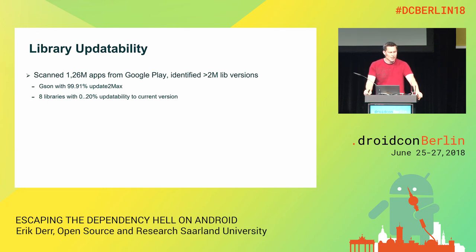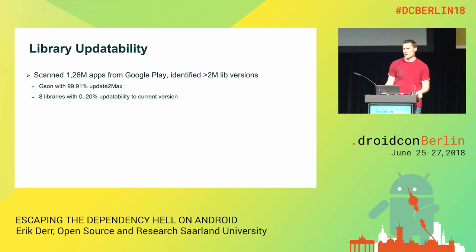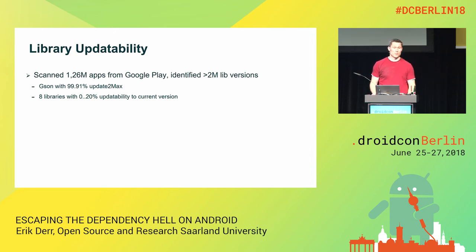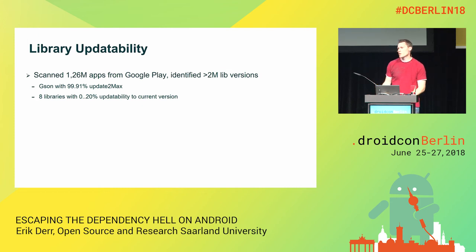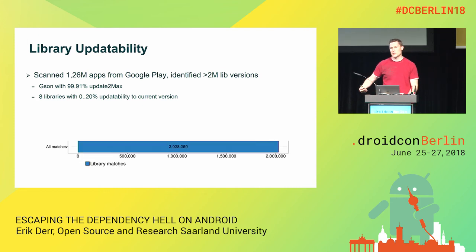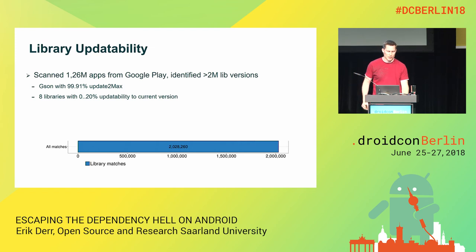A surprising example was Gson, Google's JSON library, which had almost perfect updatability to the latest version. There are a couple of reasons: not that many versions, apps use only a very small subset of APIs — typically just 'fromJson' and 'toJson' — and those APIs rarely change across all library versions. At the same time, we found eight libraries with only zero to 20% updatability to the latest version, where basically every new release had some API-breaking changes.